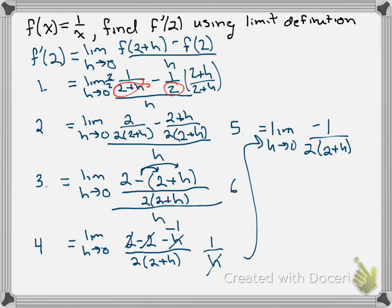Step 6, we take our limit. That's plugging in 0 for h. And we get negative 1 over 2 times 2 plus 0, which simplifies down to negative 1 fourth.